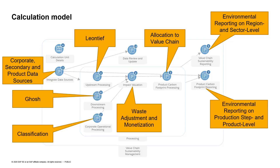In corporate operational processing, the relevant accounting data are classified with regard to their greenhouse gas scope. The interim results from the upstream, downstream, and corporate calculation flow into the impact valuation, where a waste adjustment is first carried out and then the result is monetized. The optional product carbon footprint processing allocates all results on the level of individual production steps and products based on the material ledger value chain data.